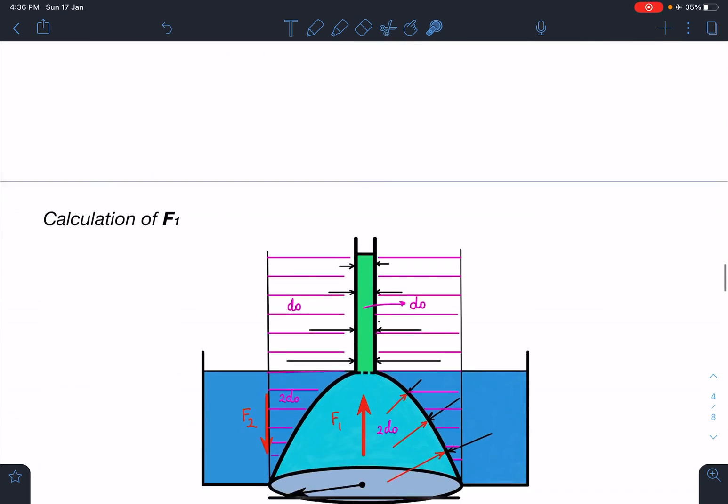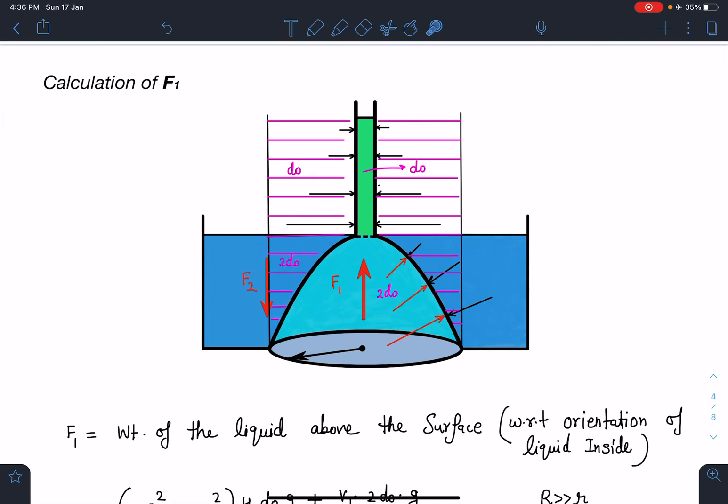Now the main part, the tricky part, is calculation of force F1. If you go through those videos where we have derived: whether liquid is present below the surface or it is present above the surface, in both cases forces are equal. For above the surface, we know the logic: the weight of the liquid above the surface, right? But you need to maintain the original configuration of liquids. Like here, the green one is present up to height H, its density is d naught, and this liquid is having density of 2d naught. So when I'm going to write weight of the liquid above the surface, I will take corresponding to this entire part in green that is having density of d naught, and this part I'm going to take this volume and this volume as if it is from 2d naught.